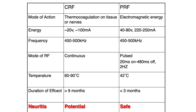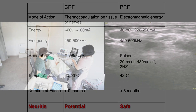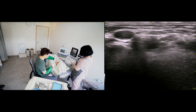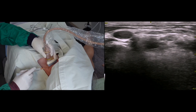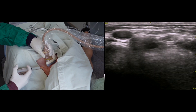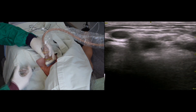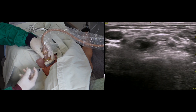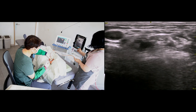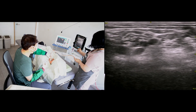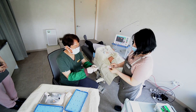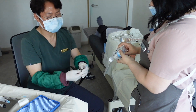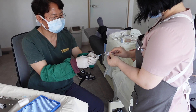Pulsed radiofrequency operates at 42 degrees Celsius without producing neural injury. Let's go back to my patient. My target will be the right C6 and C7 nerve roots. I am anesthetizing the skin under ultrasound guidance. I would not administer local anesthetics around the nerve root because it may hamper the effect of post radiofrequency. I am preparing the drugs that would be administered after the RF procedure, using the same protocol as cervical nerve root block.